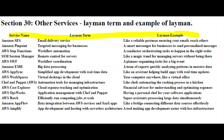AWS Chef and Puppet — Automation Tools for Managing Infrastructure. It functions like chefs in a kitchen automating cooking processes, ensuring infrastructure is well managed.